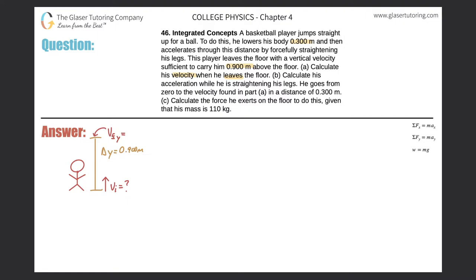So the final velocity in the y-direction will be equal to zero meters per second. Mr. Elijah is in free fall once he leaves the floor. Remember, the acceleration due to gravity is acting on him: negative 9.80 meters per second squared.